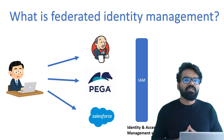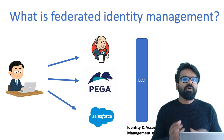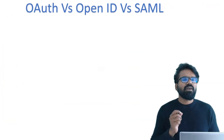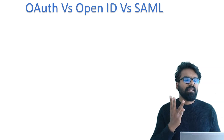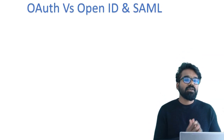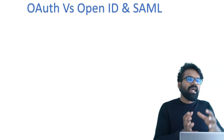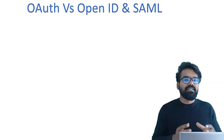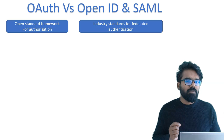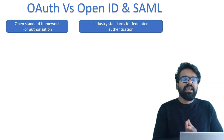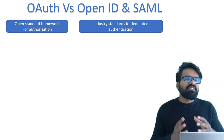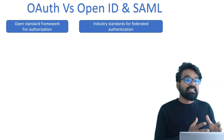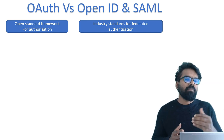When you talk about single sign-on, you mostly come across three things: one is OAuth, two is OpenID, and three is SAML. I want to rephrase this as OAuth versus OpenID and SAML, because there is a main difference between OAuth and the other two. OAuth is an open standard authorization framework, whereas OpenID and SAML are industry standards for authentication. OpenID is built over the OAuth framework layer, whereas SAML has its own XML messaging standards.